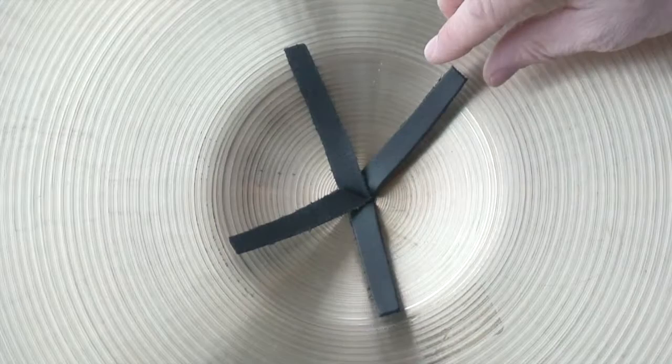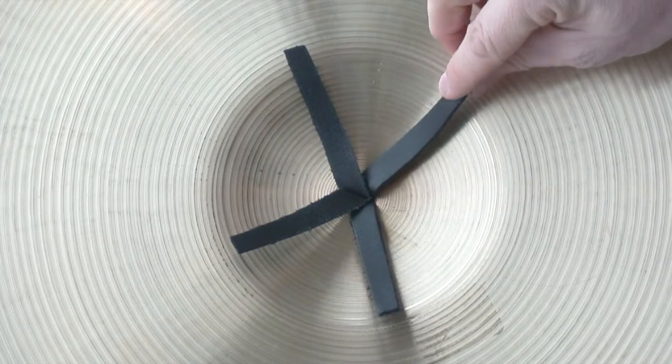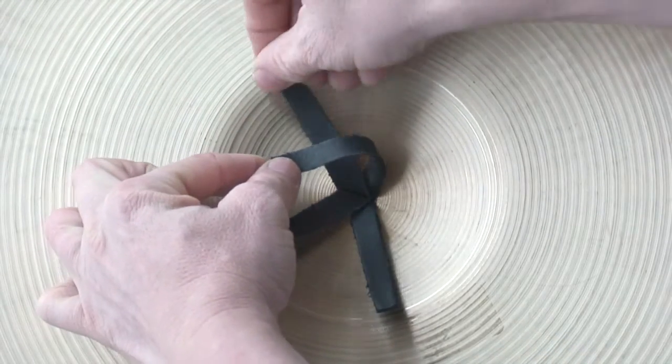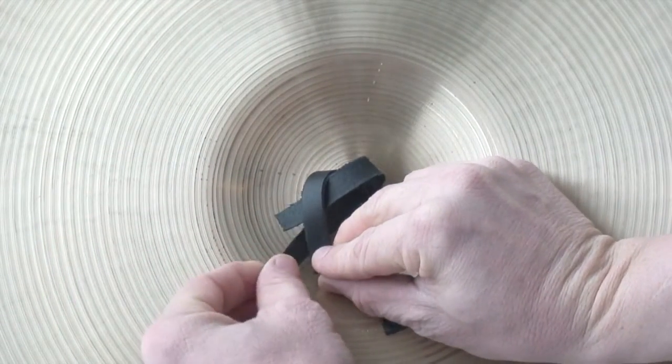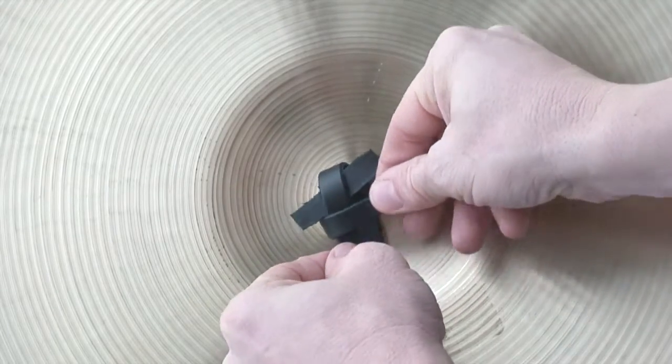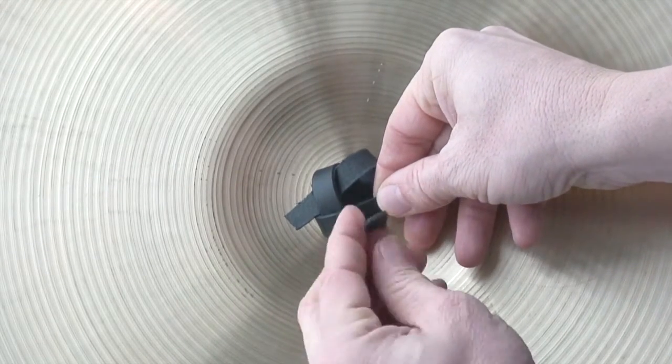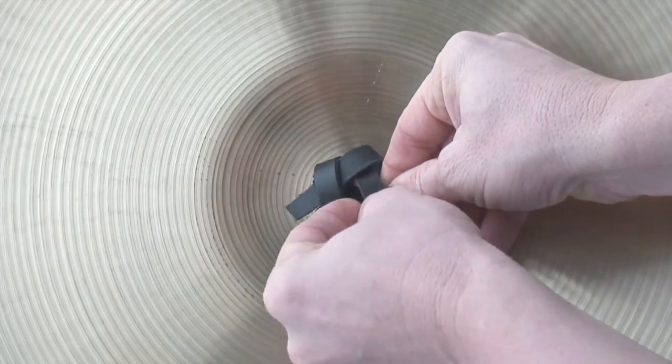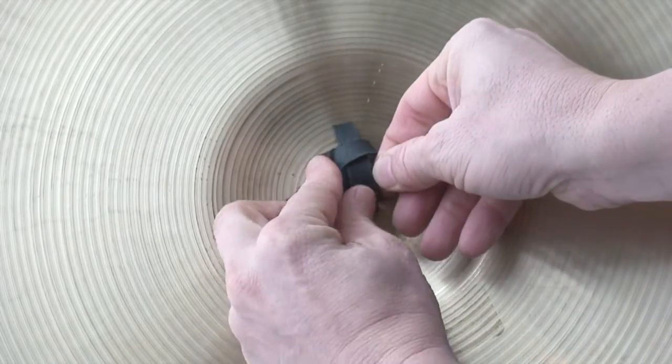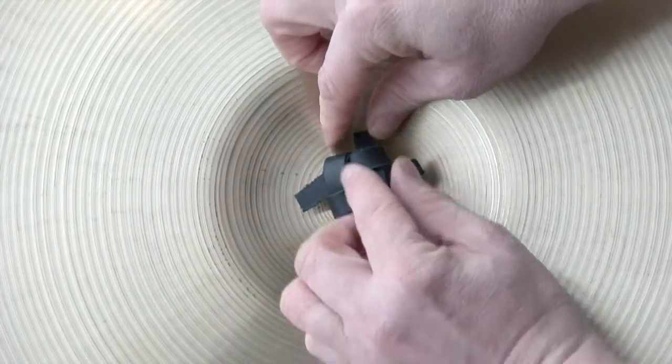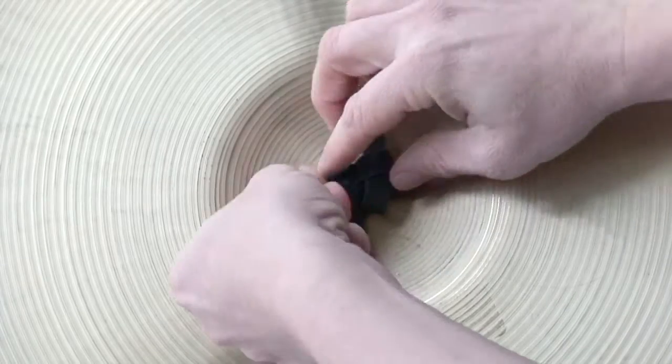Spread the straps out to form an X. Take one strap and lay it over the strap beside it. Take that strap and lay it over the next strap. Take the strap that you have just crossed and cross it over the next strap. Take the last strap and cross it over the strap you just laid down and then tuck it under the first strap. Tighten the straps evenly to prevent the strap from binding.